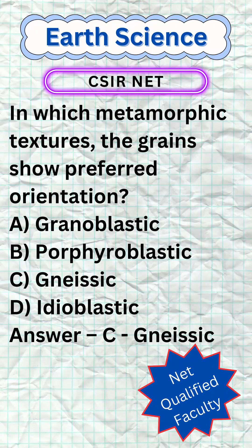In which metamorphic textures do the grains show preferred orientation? A. Granoblastic, B. Porphyroblastic, C. Nasic, D. Idioblastic. Answer: C. Nasic.